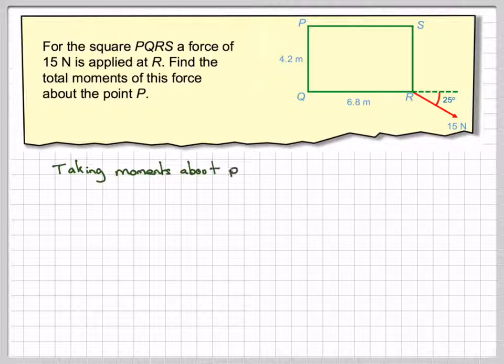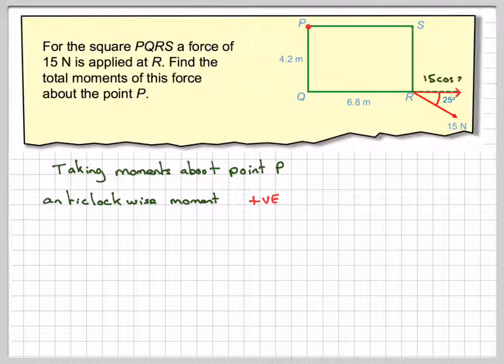So taking moments about the point P, the anticlockwise moment, positive, is going to drive it to go around anticlockwise. So this one here is 15 cos 25 degrees, using a little bit of trigonometry on this triangle here. So this force here will make the square turn anticlockwise. So it's going to be 15 cos 25 times the perpendicular distance, which is 4.2.